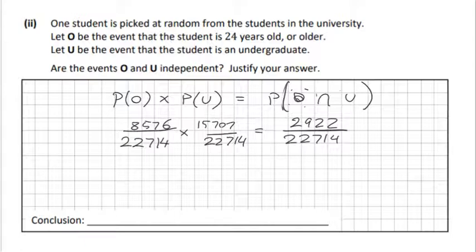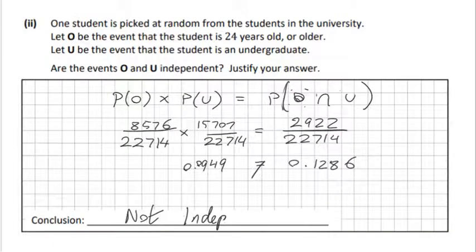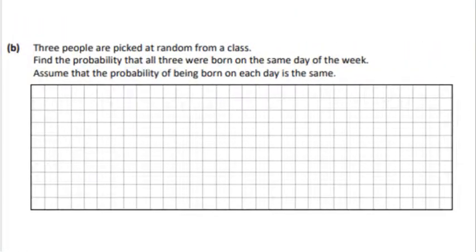When we find the numbers, we can see that 0.949 and 0.1286 are not equal. Therefore, the sets are not independent. Let's look at the next part.